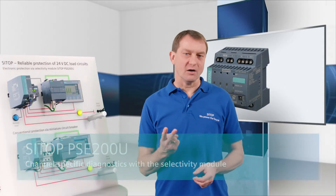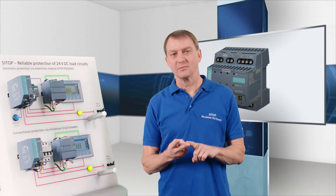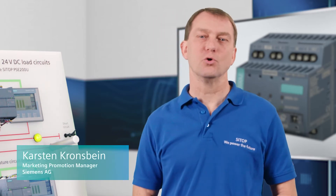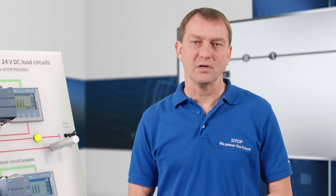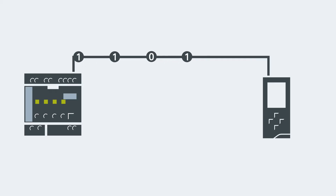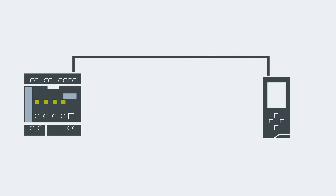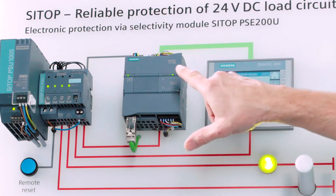Two versions of the Selectivity module are available for output diagnostics: one with common signaling contact and one with single channel signaling. The common signaling contact indicates that at least one output has switched off due to a system failure, and evaluation is performed by using a digital input in the PLC. If channel-specific diagnostics are required, single channel signaling is the smart alternative — only one digital input is required, and a serial code is evaluated by an S7 function block.